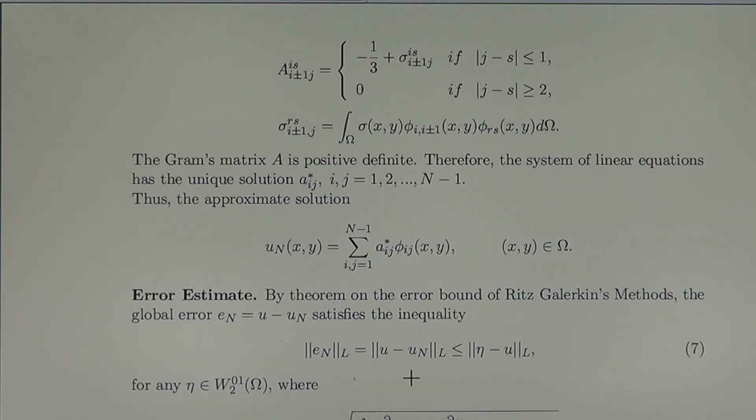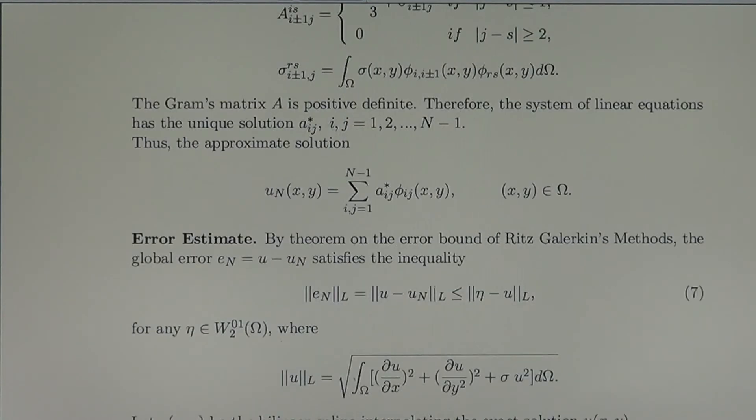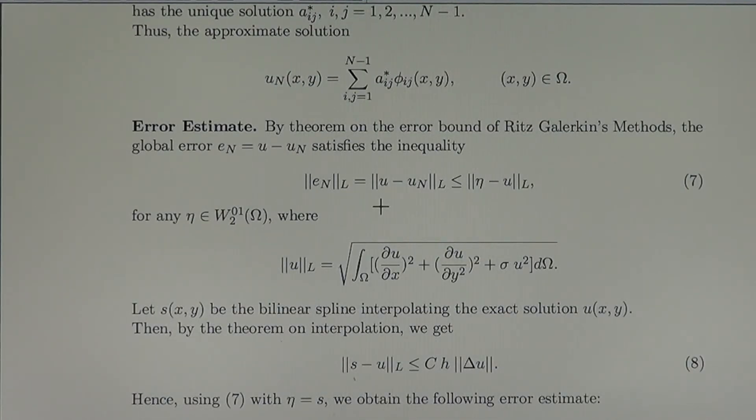Now it is important to know the error estimate. By the theorem on the error bounds of Ritz and Galerkin's methods, we remember the global error as a difference between exact solution and approximate solution satisfies the inequality that we know. We use that inequality a number of times. So that error is less or equal than every eta from the energetic space W01.